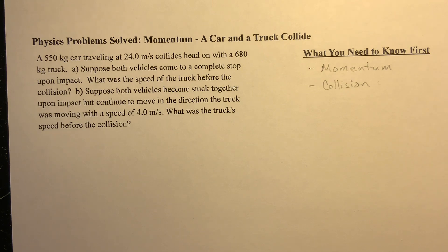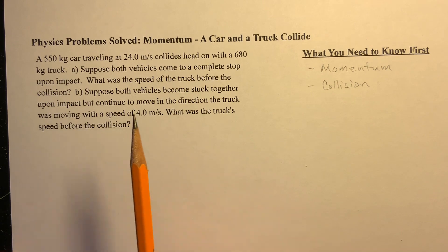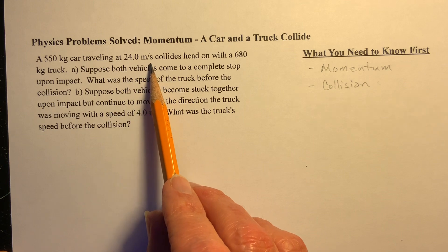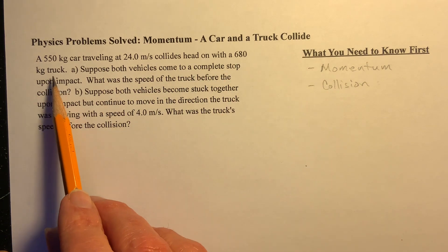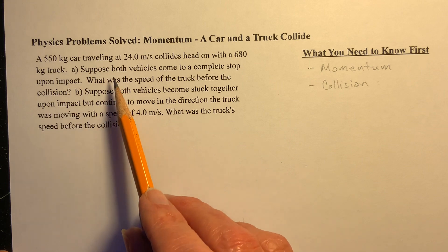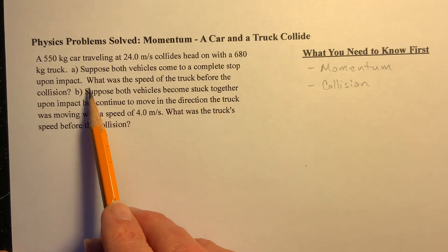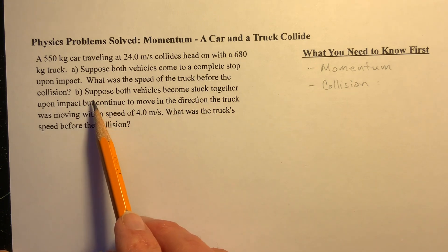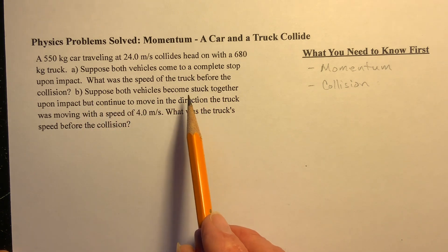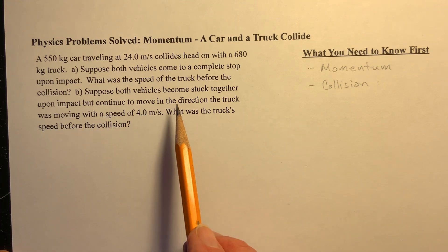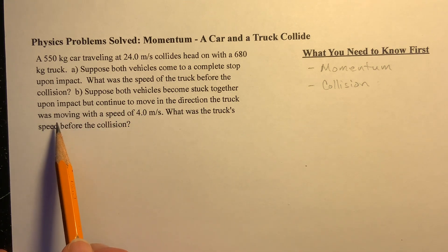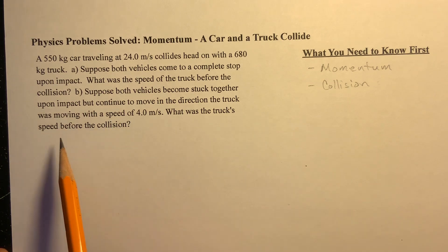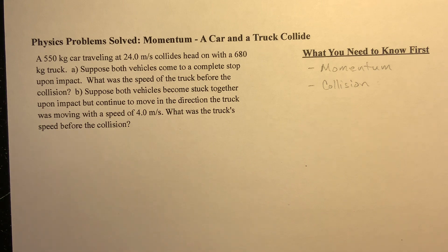All right, so here we go. Here's the problem. We have a 550 kilogram car traveling at 24 meters per second. It collides head on with a 680 kilogram truck. Suppose both vehicles come to a complete stop upon impact — what was the speed of the truck before the collision? And part B, suppose both vehicles become stuck together upon impact but continue moving in the direction the truck was moving with a speed of four meters per second. What was the truck speed before the collision?